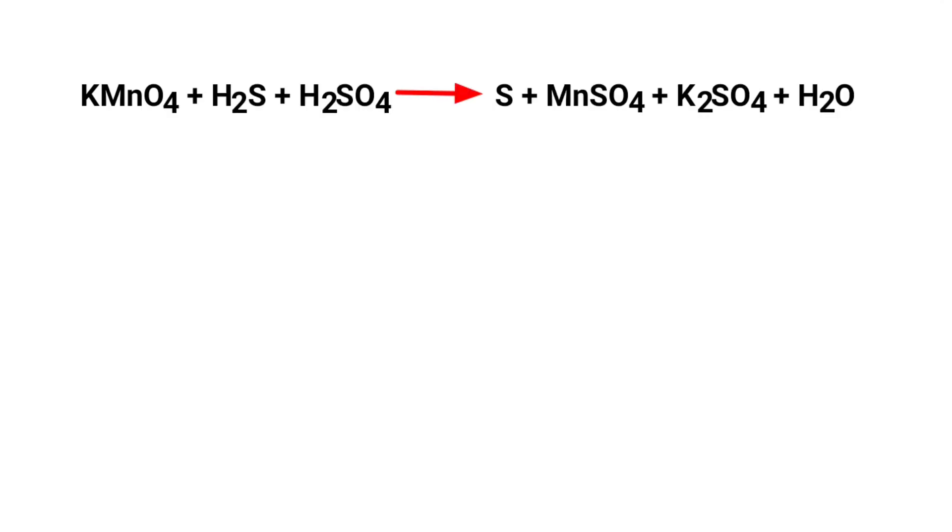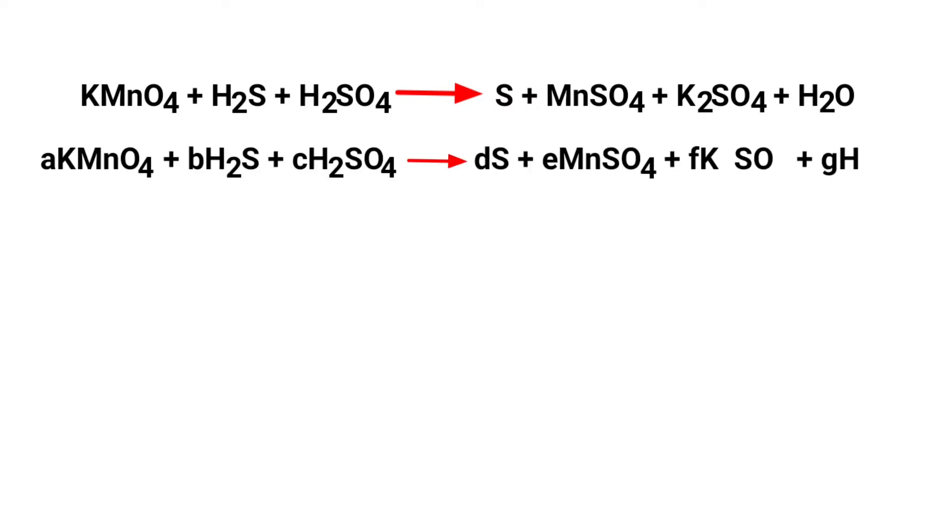First thing we do is give each compound a letter coefficient: a KMnO4 plus b H2S plus c H2SO4 gives us d S plus e MnSO4 plus f K2SO4 plus g H2O.